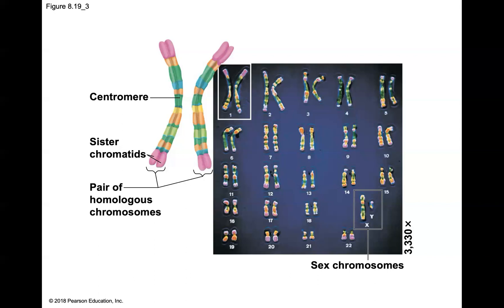Down syndrome is characterized by too many chromosomes. Chromosome number 21 normally appears as a pair, but individuals with Down syndrome have an extra chromosome 21 — a third one — so we refer to this disorder as a trisomy. Trisomy 21 is what we diagnose as Down syndrome. There are other genetic disorders involving too many chromosomes or too few, each characteristic of different disorders.